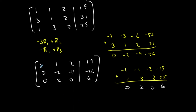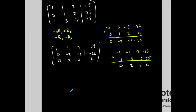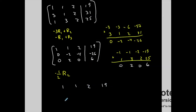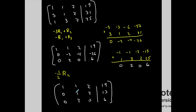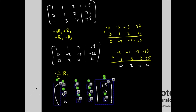Now I'm going to make this a 1 in the second pivot position. I'll take negative one-half times row 2. Row 1 stays as 1, 1, 2, 19. Row 2 becomes 0, 1, 2, 13 — since negative one-half times negative 4 is 2, and negative one-half times negative 26 is 13. Row 3 stays the same. My goal is reduced row echelon form, not just row echelon form.